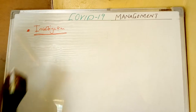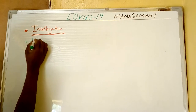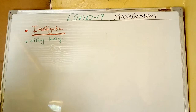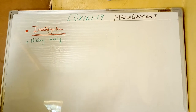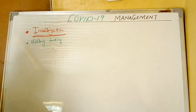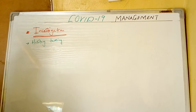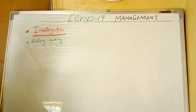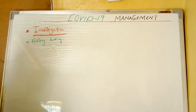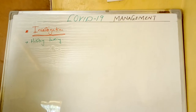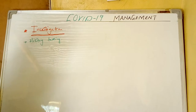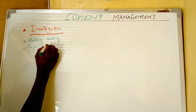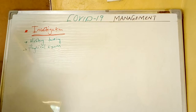The first investigation is history taking. Under history taking, you need to ask the client if they have traveled to a country which has increased numbers of COVID cases, like the USA. You can also ask the client if they are presenting with signs and symptoms of coronavirus such as shortness of breath, cough, and fever.